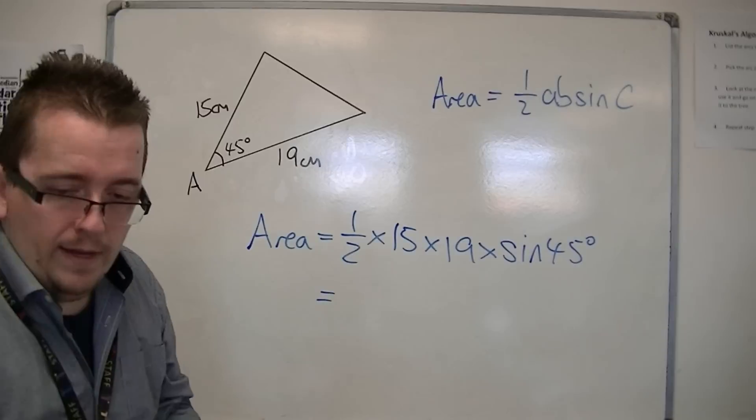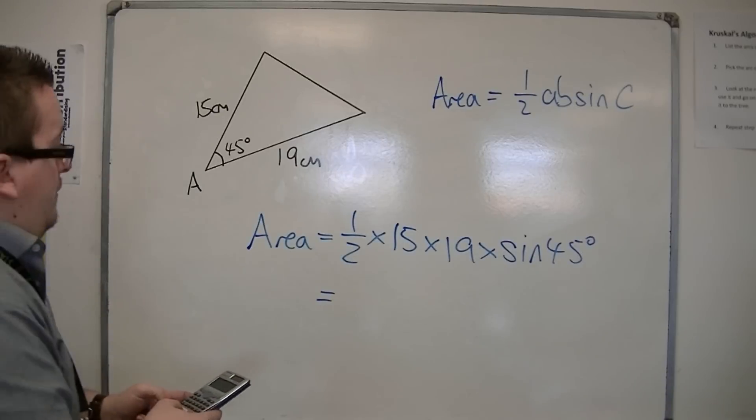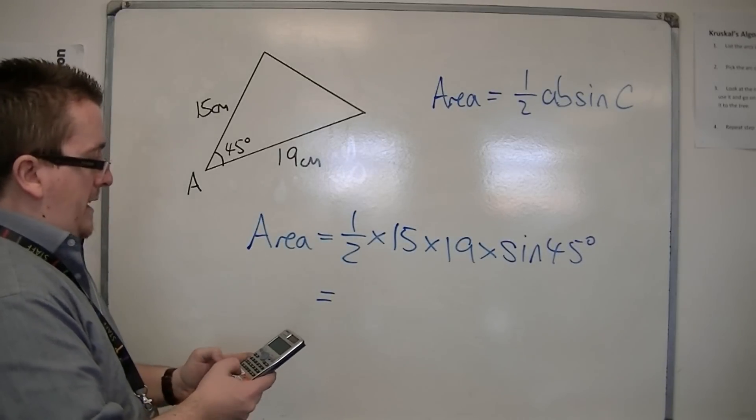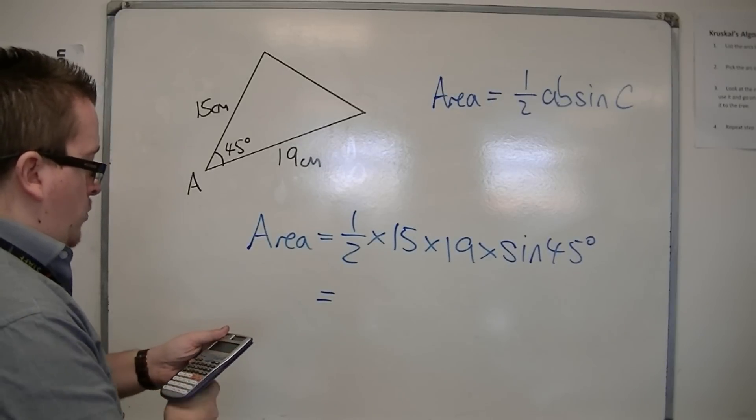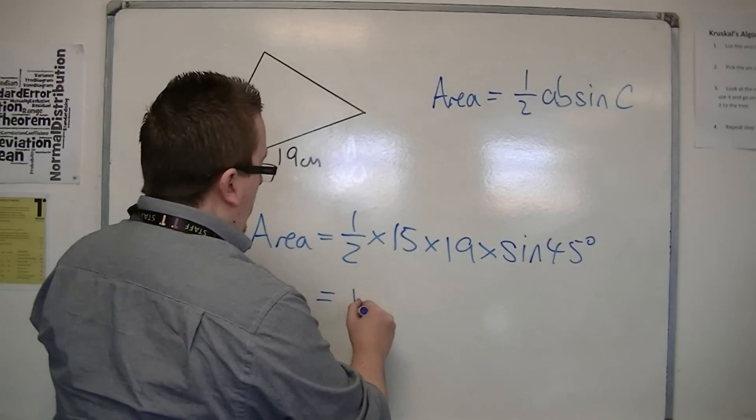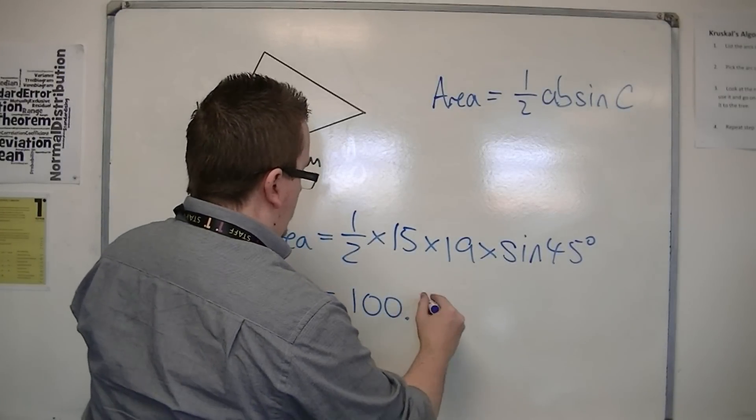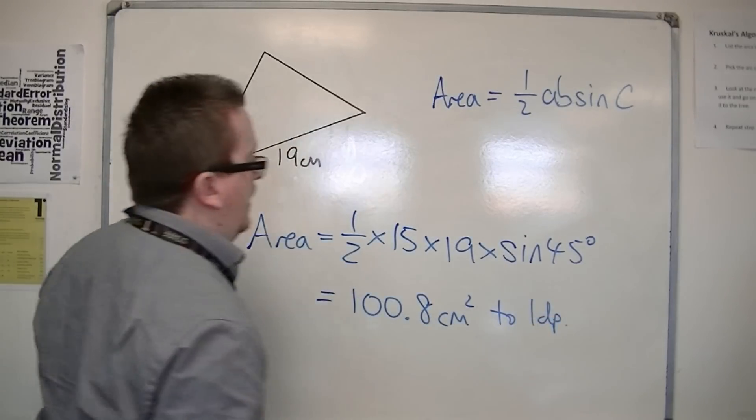Pop that into the calculator. So 0.5 times 15 times 19 times sine of 45 is equal to 100.7627, etc. So 100.8 centimeters squared to one decimal place.